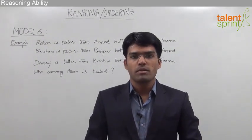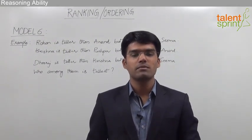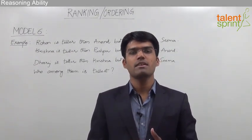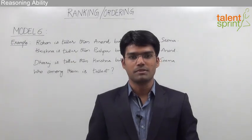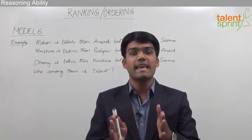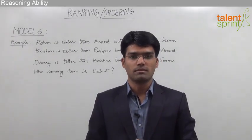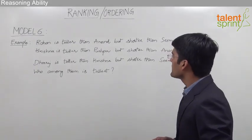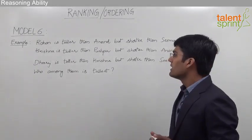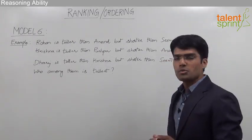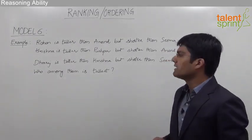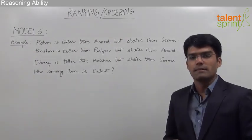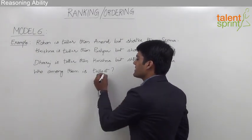Let us now take another example from ordering where we have to find out the tallest or the shortest person among the given group, or the heaviest or the lightest person — here we are trying to find out the extreme ends of the group. The question is: Rohan is taller than Anand but shorter than Sima. Krishna is taller than Pushpa but shorter than Anand. Dheeraj is taller than Krishna but shorter than Sima. We need to know who among them is the tallest.